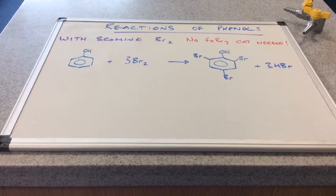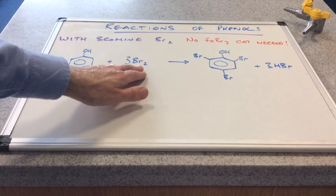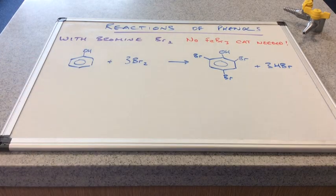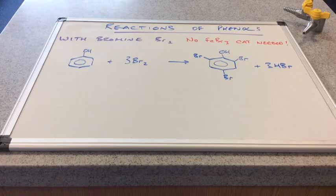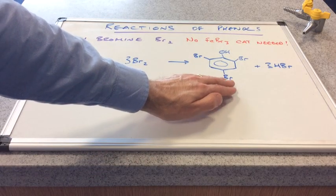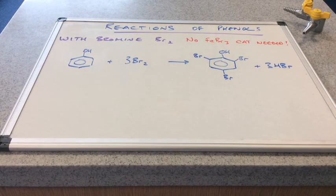Because this bromine is reacting, it's going to be decolourised. So that's one of the observations. And the other observation is this product, which I'll name in a second, is seen as a white precipitate.